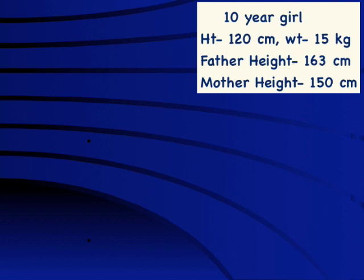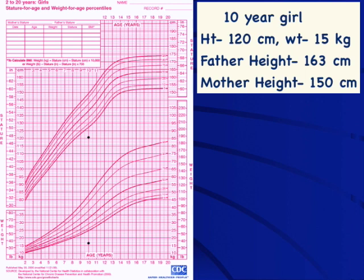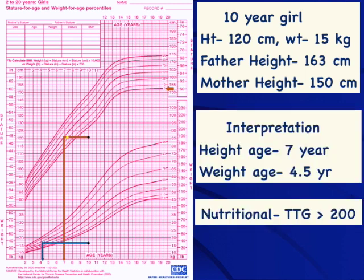This 10-year-old girl: just looking at the growth chart, you can see that it is the weight which is predominantly affected. We have to be concerned about nutritional causes of growth retardation — celiac disease, renal tubular acidosis, tuberculosis, infections. More precisely, her height age is 7 years and weight age is around 4 years; her weight stopped growing at around age 4, then height was affected. It would be a waste of money doing IGF-1, cortisol, and growth hormone in this child. Basic evaluation revealed she had celiac disease with very high levels of tissue transglutaminase antibodies.